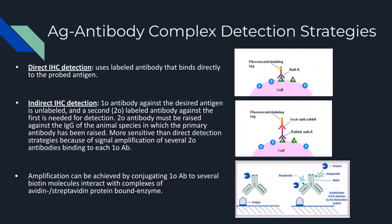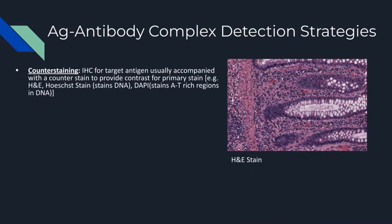Another method of amplification is by conjugating primary antibodies to several biotin molecules. These biotin molecules interact with complexes of avidin or streptavidin protein bound to an enzyme. Finally, the last detection method is called counterstaining. This is where the IHC for a target antigen is accompanied with a counterstain to provide contrast for the primary stain. A very common example of this is the hematoxylin and eosin stain, or H&E stain, that is routinely performed on pathology sites. The hematoxylin stains cell nuclei a purplish blue, and the eosin counterstain provides contrast by staining the cytoplasm and extracellular matrix pink, with other cell structures taking on different shades of these colors.